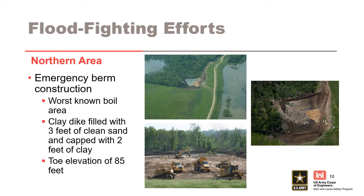In the northern area — the location of the worst-known boil — the decision was made to construct an emergency berm on the land side of the levee to increase the weight of the land side soil block. The berm consisted of a perimeter clay dike with the interior filled with a minimum of 3 feet of clean sand, capped with 2 feet of clay. The exterior of the berm was covered with a 10-foot wide and 2-foot thick layer of stone, with the toe of the berm at an elevation of 85 feet, 5 feet above the original ground surface.